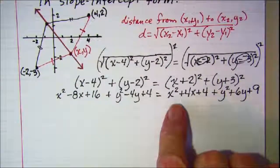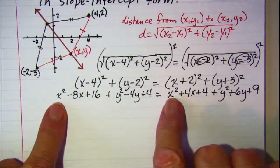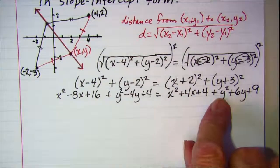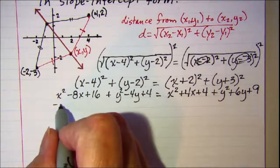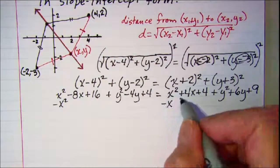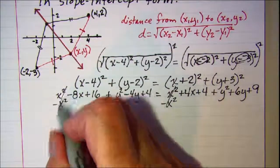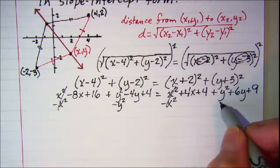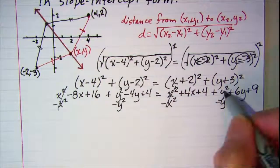Now we'll notice that we have an x² on both sides and a y² on both sides. So we can subtract x² from both sides and those will cancel. And we'll subtract y² from both sides and those will cancel.